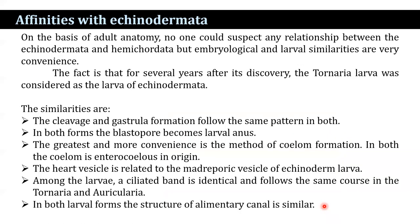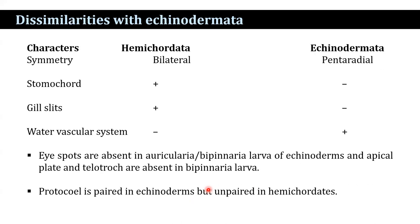Regarding affinities with Echinodermata: on the basis of adult anatomy, no one could suspect any relationship between Echinodermata and Hemichordata. But embryological and larval similarities are very convenient. For several years after its discovery, the tornaria larva was considered a larva of Echinodermata. Similarities include: cleavage and gastrulation follow the same pattern in both; in both forms the blastopore becomes the larval anus; the coelom is enterocoelous in origin in both; and the heart vesicle is related to the hydroporic vesicle of echinoderm larvae. A ciliated band is identical and follows the same course in the tornaria and auricularia. The structure of the alimentary canal is similar in both larval forms.